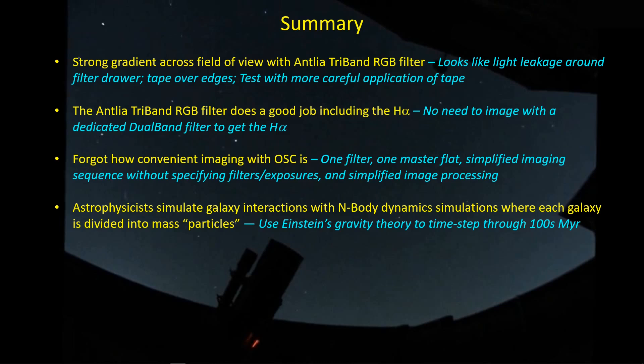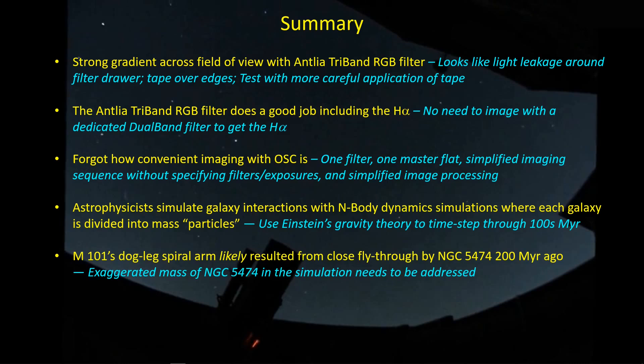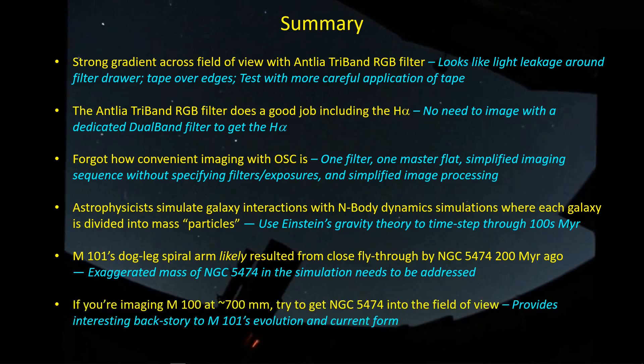We took a look at how astrophysicists simulate galaxy interactions using an N-body dynamics simulation where each galaxy is divided up into mass particles, then use gravitational dynamics to determine where all those mass particles end up. It looks like that 200 million years ago, NGC 5474 passed through the disk of M101, and that's what resulted in the dog-leg spiral arm so recognizable as part of M101. They did have to exaggerate the mass of 5474 by a factor of four to get those results, so there's still work to be done to truly understand how 5474 interacted with M101. If you have about a 700mm scope and you're imaging M101, try to frame your image so you can get 5474 in the field of view — it provides an interesting backstory to how M101 may have evolved into its current form.